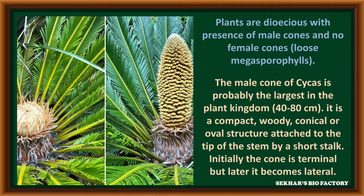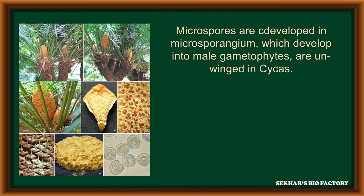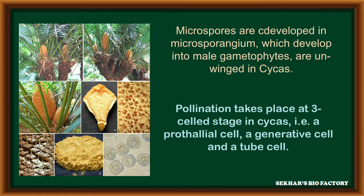These cones are attached to the tip of the stem with the help of a stalk. Initially the cones are terminal but later become lateral. Microspores are developed in microsporangium, which develops into the male gametophyte. Unwinged pollen grains are formed. Pollination takes place with the help of a three-celled stage. In Cycas, one prothallial cell, a generative cell and tube cell are present.